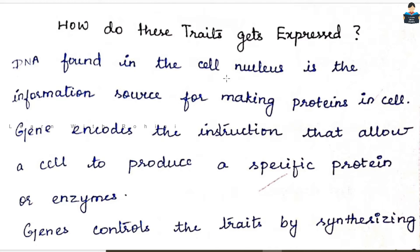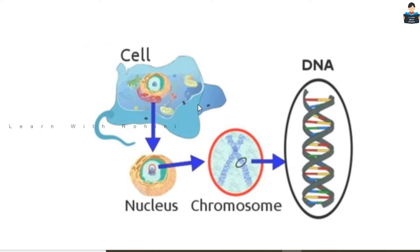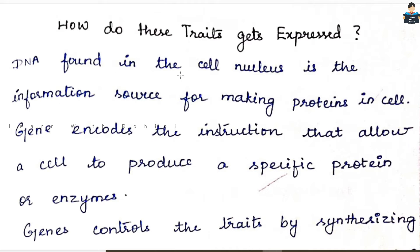DNA found in the cell nucleus is the information source for making proteins. In the cell, inside the nucleus, inside the chromosomes, inside the DNA — the DNA found in the cell nucleus is the information source for making proteins in the cell. Genes are located in the cell.